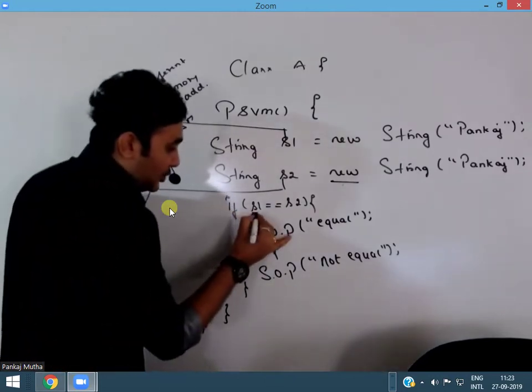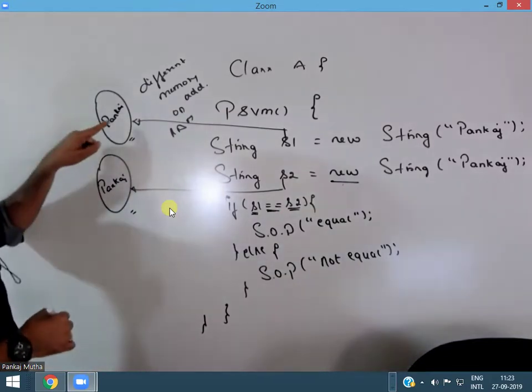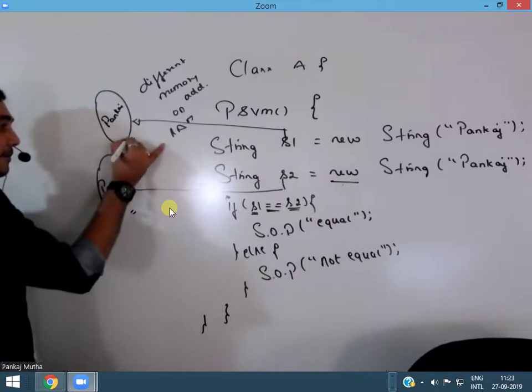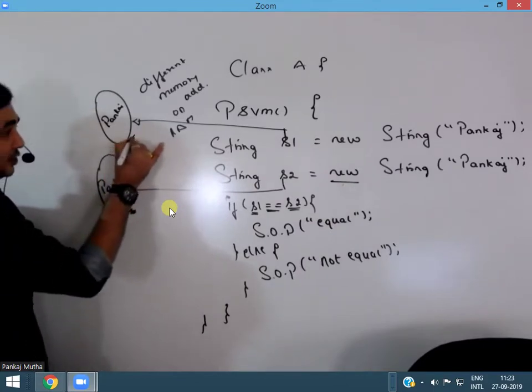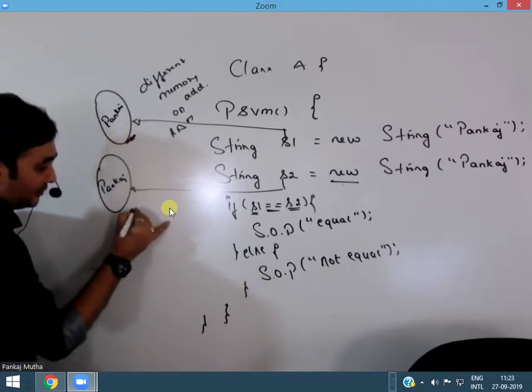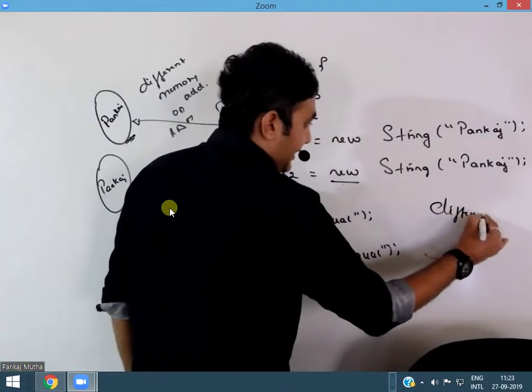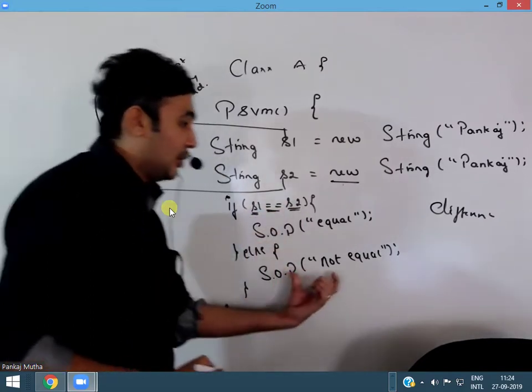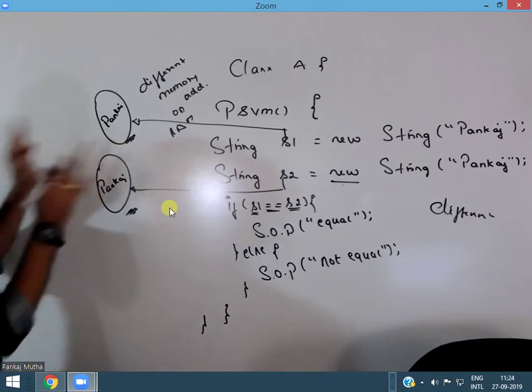So when I'm comparing s1 double equals s2, you're not comparing the values stored in the object but you're comparing the address of the object. The address of object s1 and the address of object s2, they are different. Now when they're different upon comparison, they're not equal because object's addresses are different.